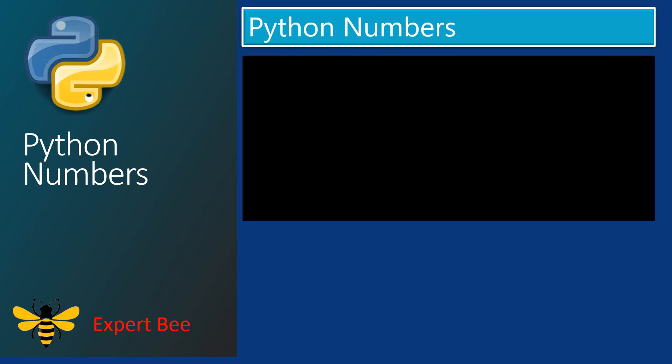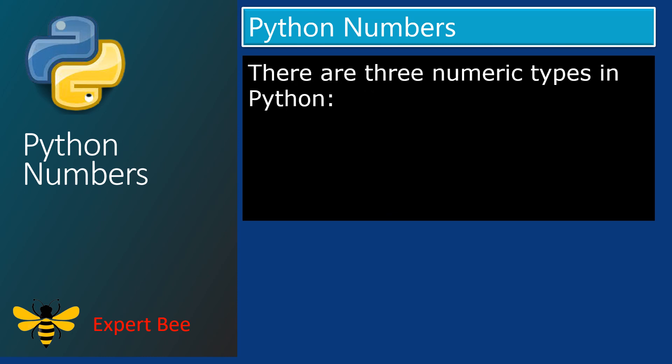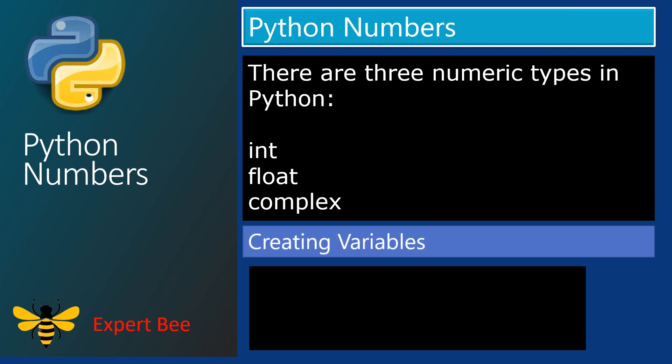In Python, there are three different numeric data types. The first one is integer, the second one is float, and the third one is the complex number. In the previous video on Python variables, we studied how to create a variable. Let us look again at some examples of creating variables of numeric data types.